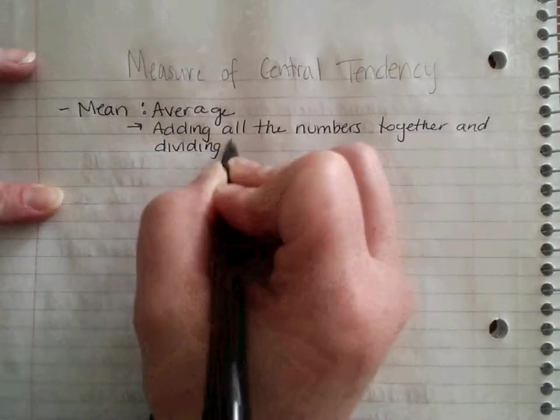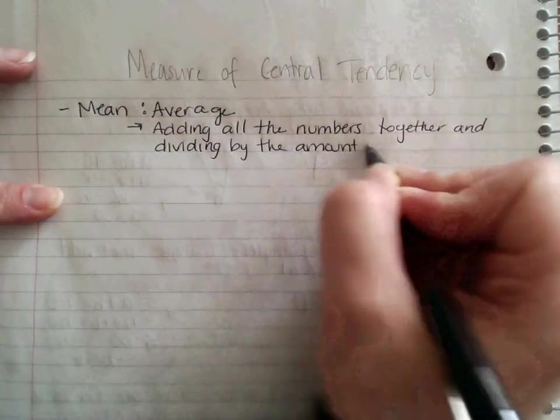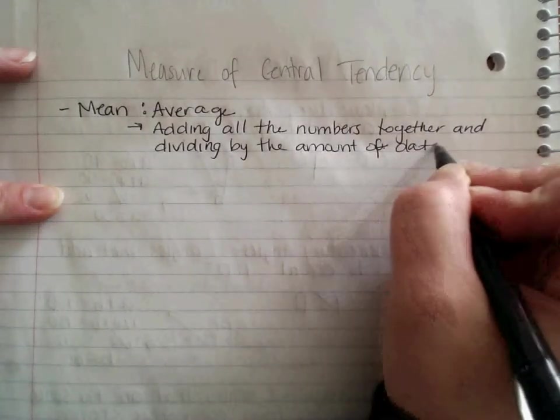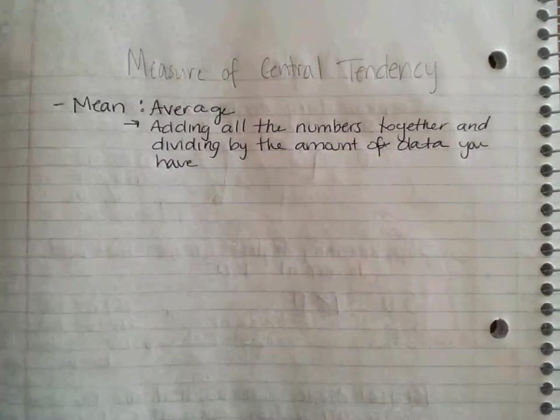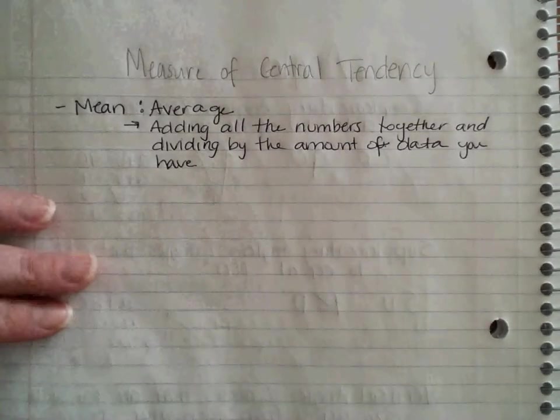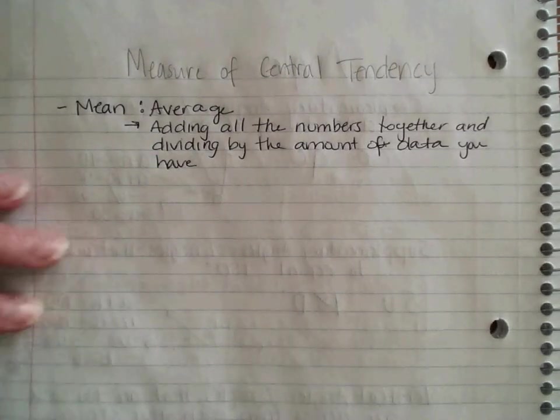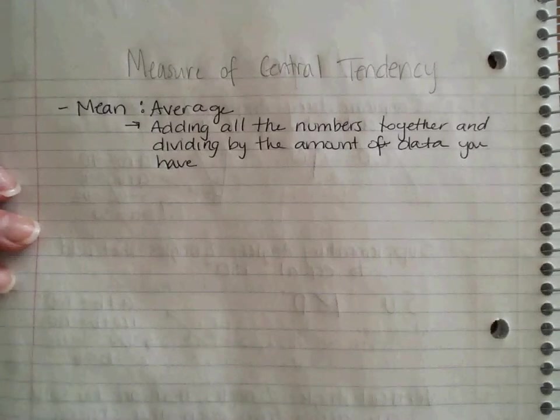And dividing by the amount of data you have. We're going to do an example here in just a minute. But I want to give you the definitions first. So mean is the average and the average is the middle number of the actual numbers you have. You have to add them up and divide by how many you have. So if I have five different numbers, I'm going to divide by five. If I have eleven different numbers, I'm going to divide by eleven.